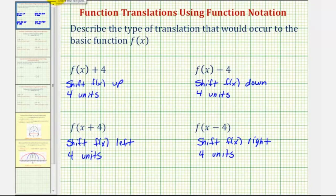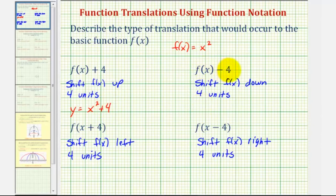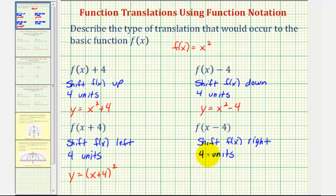Let's consider the basic function f of x equals x squared as an example. If f of x equals x squared, then f of x plus four would be y equals x squared plus four. F of x minus four would be y equals x squared minus four. And f of the quantity x plus four — notice how x plus four becomes the input into our function — we would have y equals the quantity x plus four squared. And finally, for f of the quantity x minus four, we would have y equals the quantity x minus four squared.